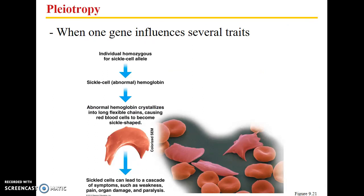Sickle cell disease is an example of pleiotropy, where a single gene influences several traits. An individual homozygous for the sickle cell allele will have abnormal hemoglobin that crystallizes, causing the red blood cell to become sickle-shaped. Those sickled cells then lead to a cascade of symptoms including weakness, pain, organ damage, and paralysis — all from one gene influencing multiple traits.